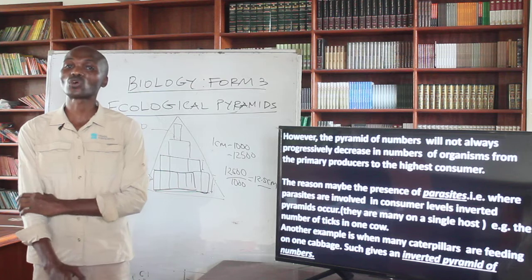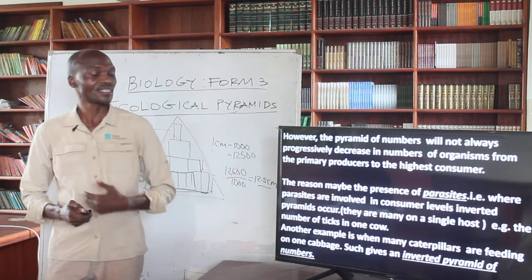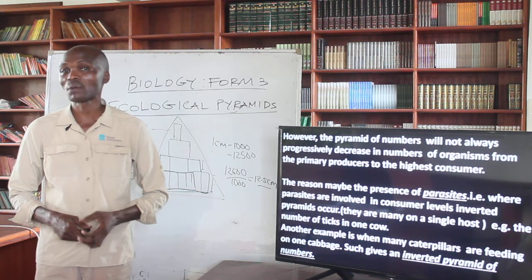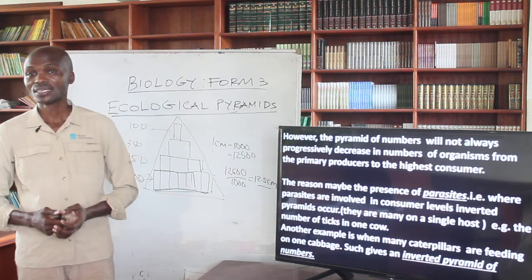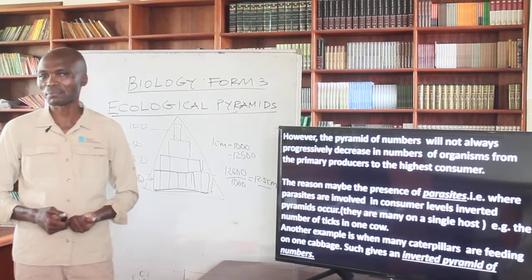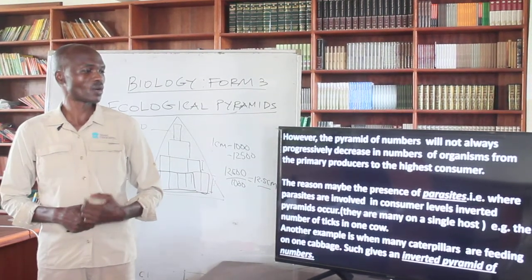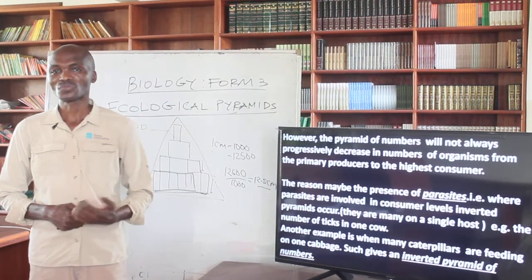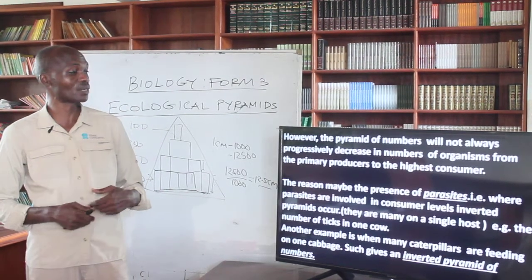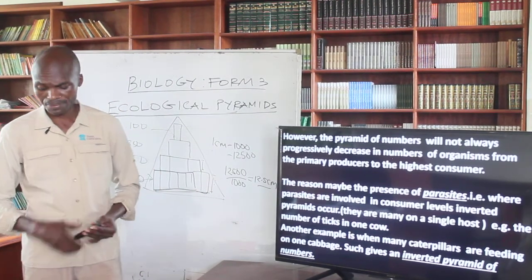However, the pyramid of numbers will not always progressively increase in numbers from primary producers to higher consumers. The reason could be the presence of parasites at consumer levels, which can produce what is referred to as an inverted pyramid. In an inverted pyramid, there are more consumers than producers. For example, you could have around 20 ticks feeding on a single cow, giving you an inverted pyramid.